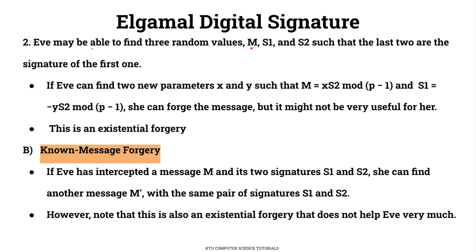In the second option, three random values are chosen. We select S1 and S2, then solve two simultaneous equations: M equals X times (P-1), and S1 equals minus Y times F2. Solving for the two parameters X and Y, a forger can construct a message — this is an existential forgery, where the message is forged rather than chosen.